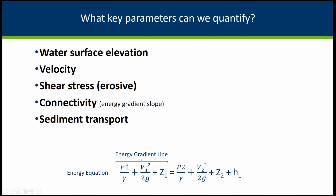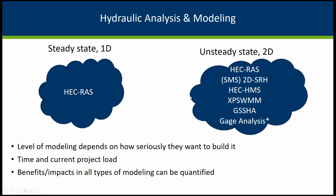The key parameters we quantify are water surface elevation — very important for FEMA submittals — velocities, shear stress, erosion, and connectivity in terms of energy gradient slope and sediment transport. From the energy equations, the energy gradient line represents pressure flows, dynamic flows, and static flows. When you have confinement through a crossing, you see a sudden change in the energy gradient line due to head losses as it expands and contracts — we want to minimize this and sustain a connected system. For modeling, we use FEMA-approved models, including steady-state 1D HEC-RAS for preliminary cases, then 2D RAS or SRH-2D for implementation. For hydrology, we use XPSWMM and GESHA, and gauge analysis is really important.